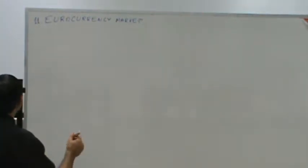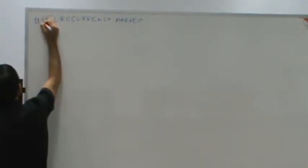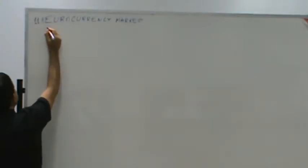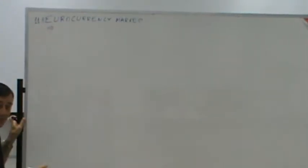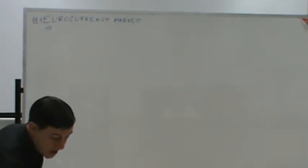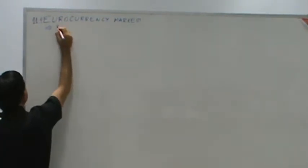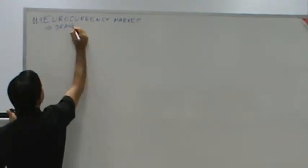We had section 11 on the euro currency market. Now we're down to the last mini section or subsection there: drawbacks.